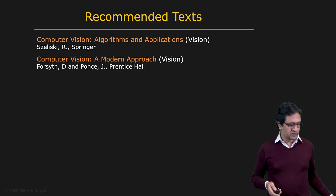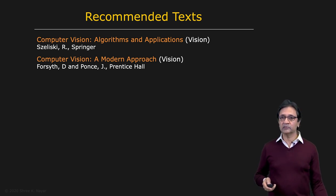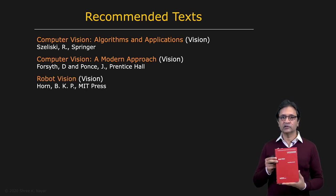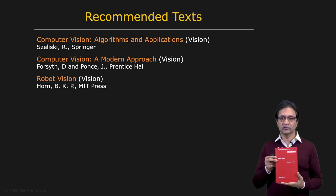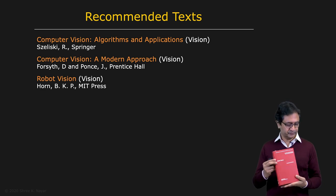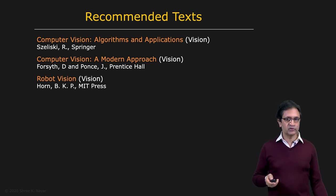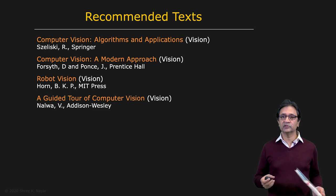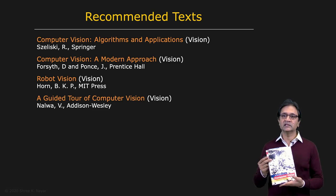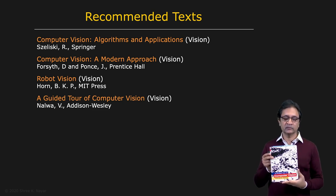And when it comes to the first principles of some of the topics that we cover, it's hard to beat Robot Vision by Berthold Horn. Berthold Horn is extremely precise in his presentation. Another nice book that gives you an overview of computer vision is A Guided Tour of Computer Vision by Vic Nalwa.